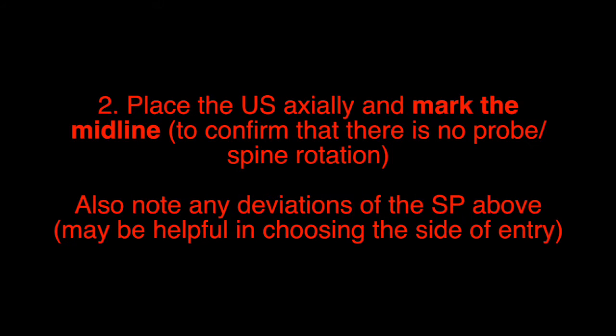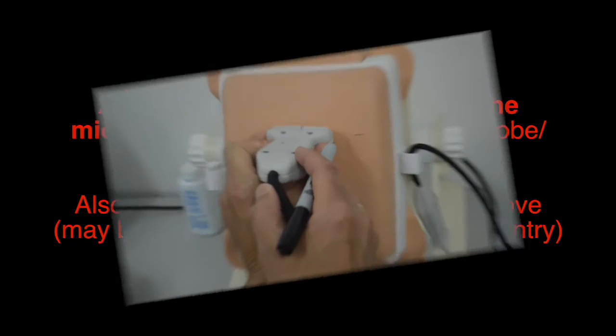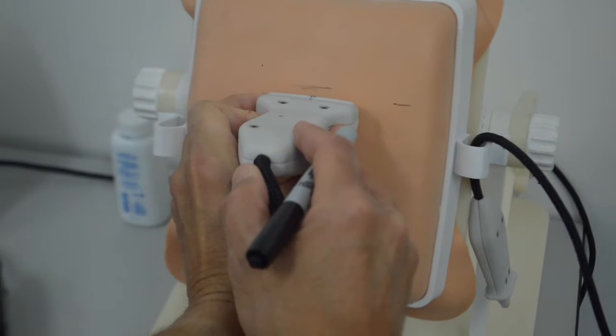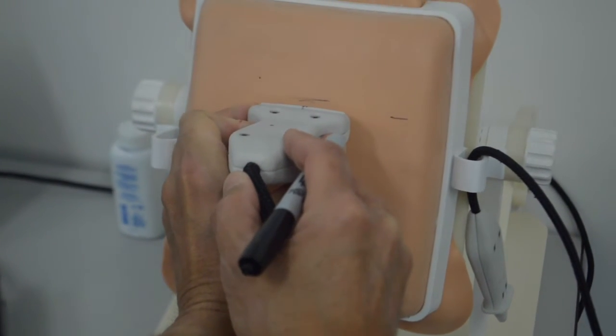Step 2: Place the ultrasound axially and mark the midline to confirm that there is no probe or spine rotation. Also, note any deviations of the spinous process above. This may be helpful in choosing the side of entry. Here, we are placing the probe axially and marking the midline.